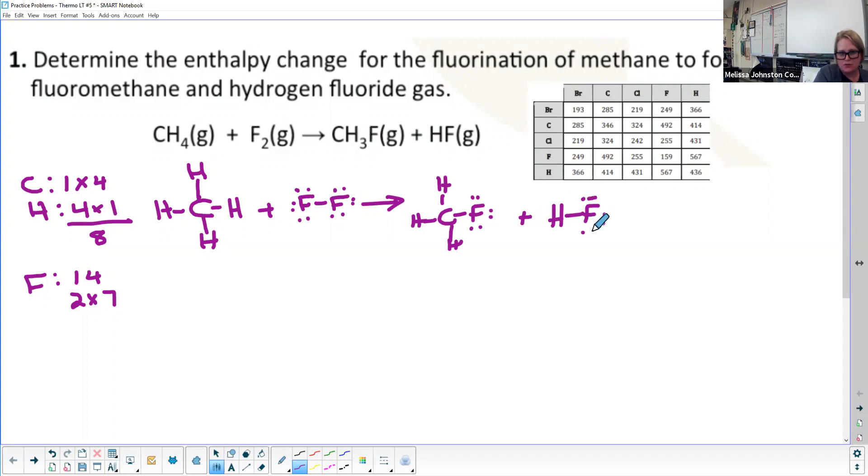There's step one, I've got my Lewis structures. Now I'm going to remember that my enthalpy of formation is going to equal the sum of the bonds broken minus the sum of formed. I'm going to now use my data table.